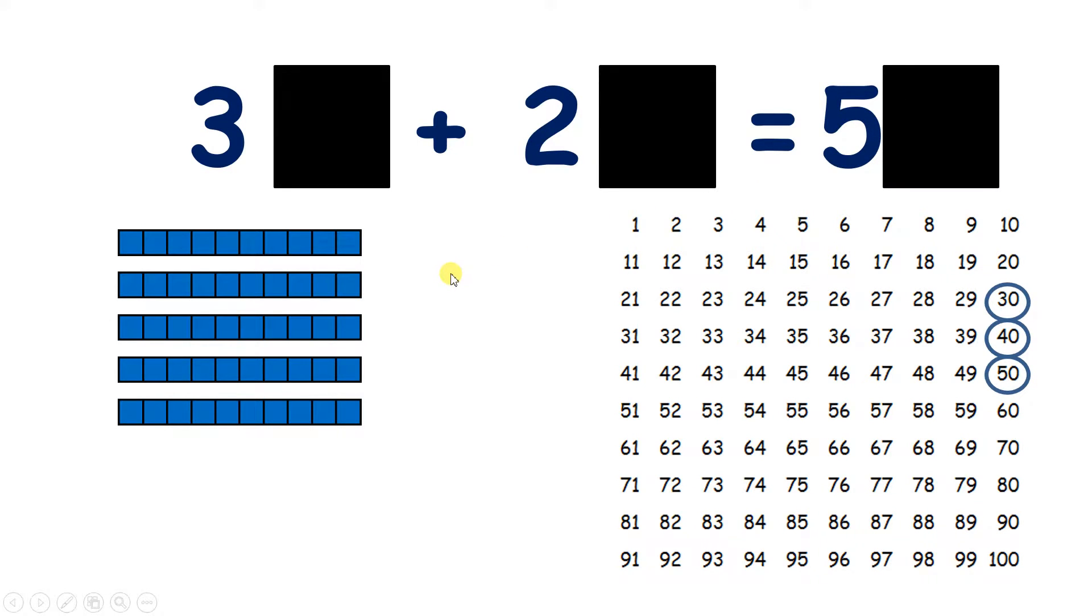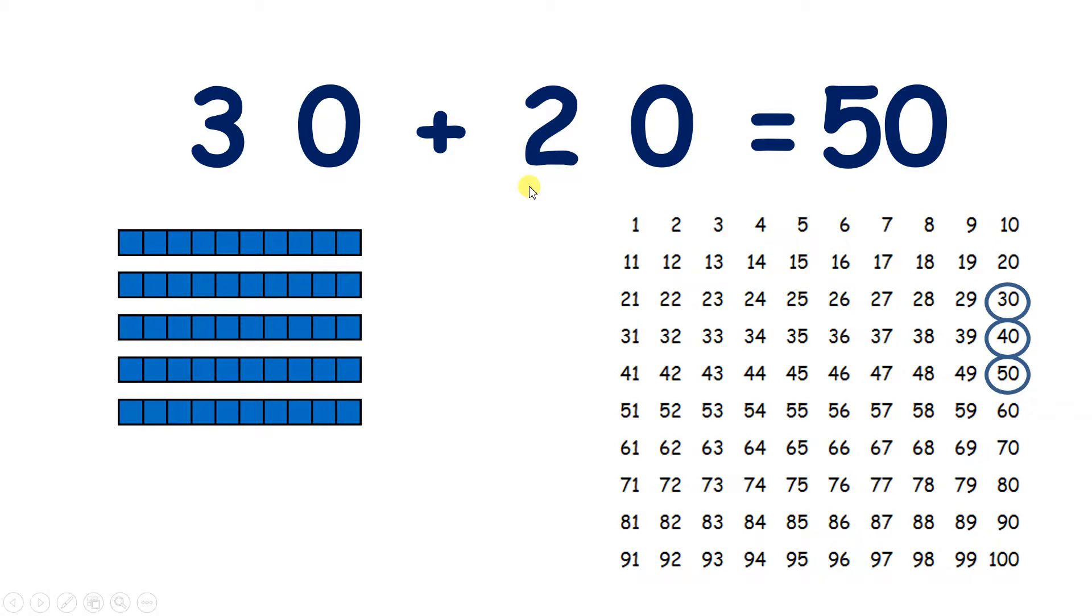Now this is interesting. We know that 3 plus 2 is 5. And this is very similar to what we're doing here. Except that instead of 3 units plus 2 units, we have 3 tens plus 2 tens.